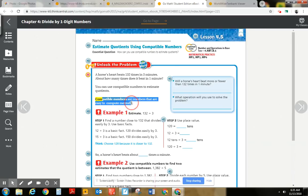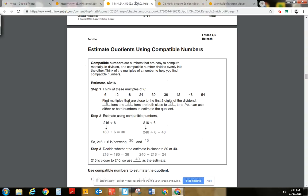So remember that compatible numbers are numbers that are easy to compute mentally. And in this lesson we're really going to focus on identifying those multiples. We did this a couple of lessons ago where we wrote down the multiples and we're going to do that same type of thing and combine it with our knowledge from yesterday's lesson to help us estimate.